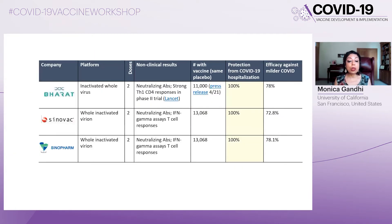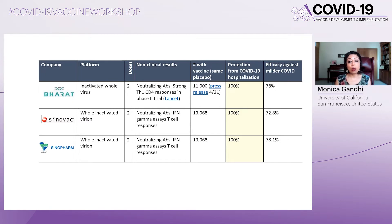The three inactivated whole virion candidates — Covaxin, Sinovac, and Sinopharm — are also all two-dose vaccines. They all measured CD4 and CD8 cell responses in their own way, and they also had 100% protection from severe disease.